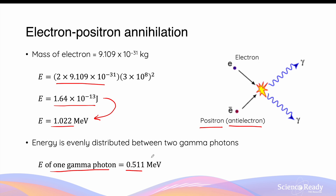In both examples of low energy annihilation, the particle and its antiparticle are completely transformed into energy in the form of two photons. The kinetic energy of these particles prior to the collision is not included in the calculation, as it is relatively negligible compared to the energy derived from the mass. It is also important to note that the starting mass of the particle and antiparticle determines the energy of the photons produced. Since the electron and positron have relatively smaller masses compared to the proton and antiproton, the energy of the gamma photon from electron-positron annihilation is much smaller than that from proton-antiproton annihilation.